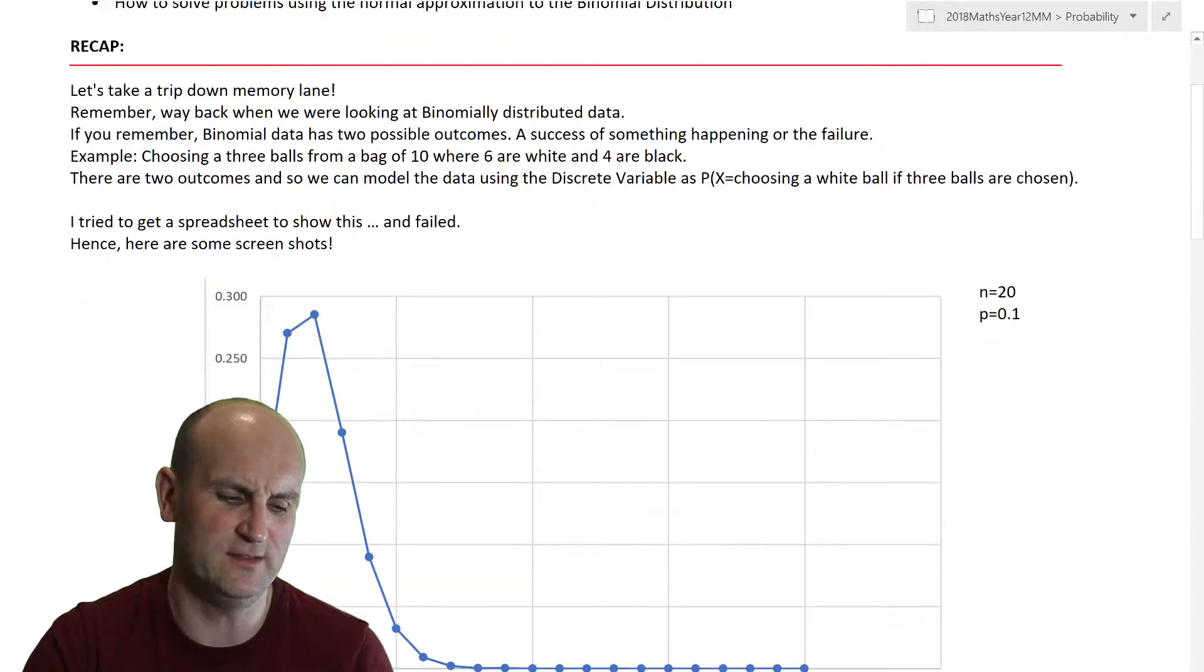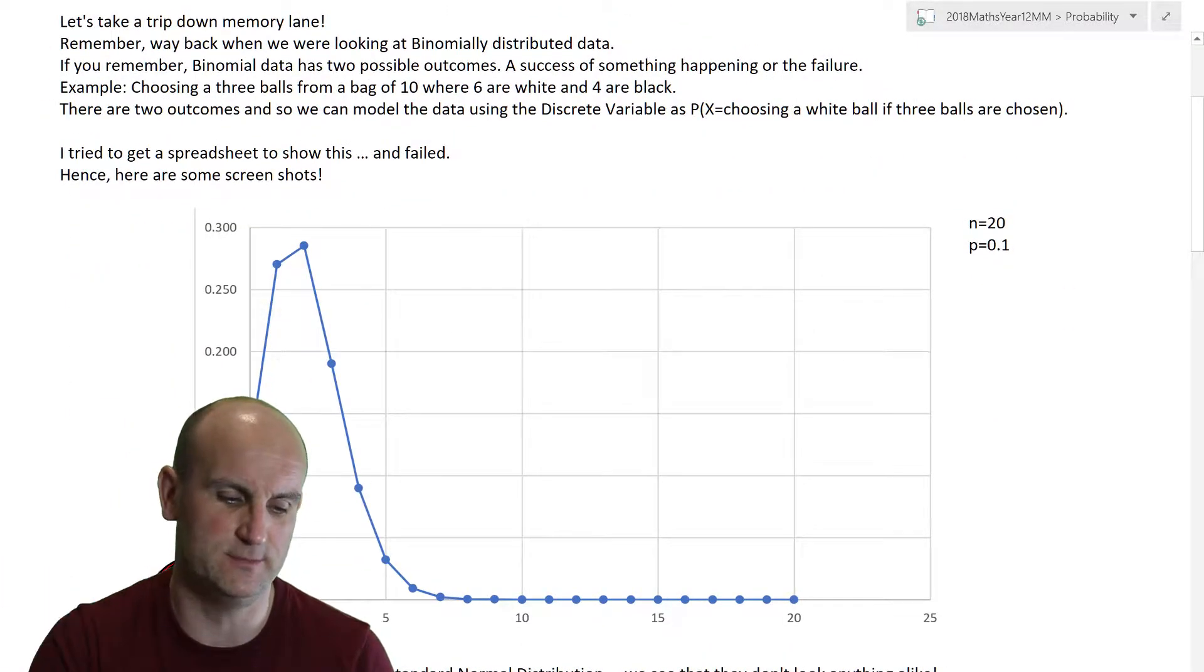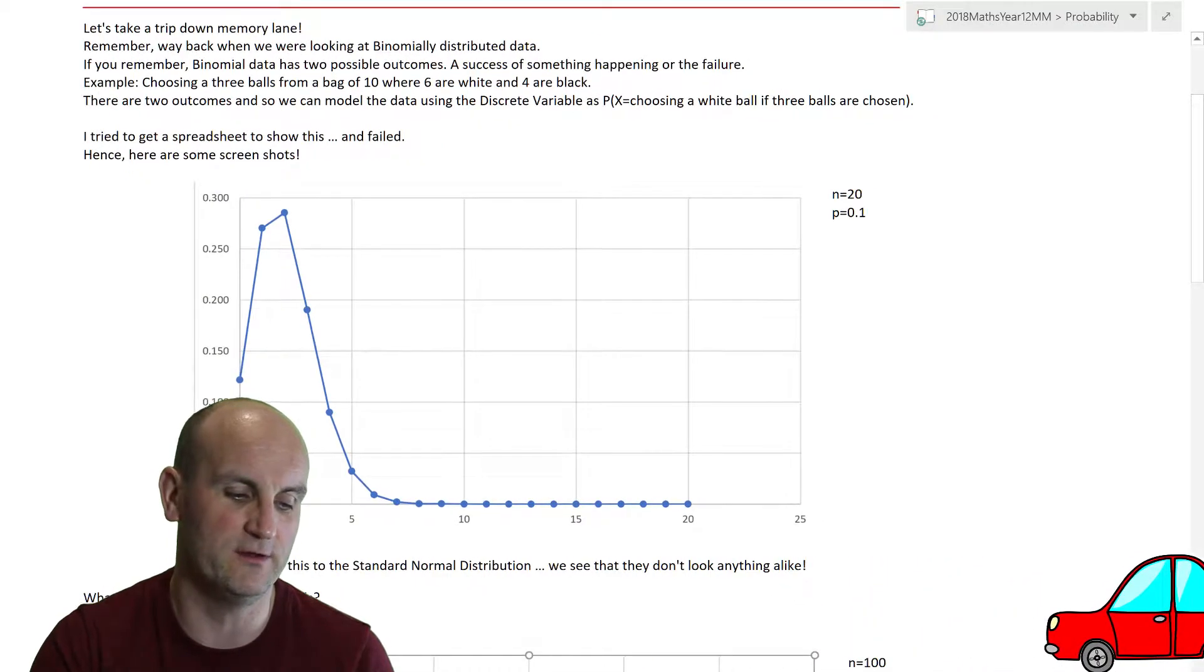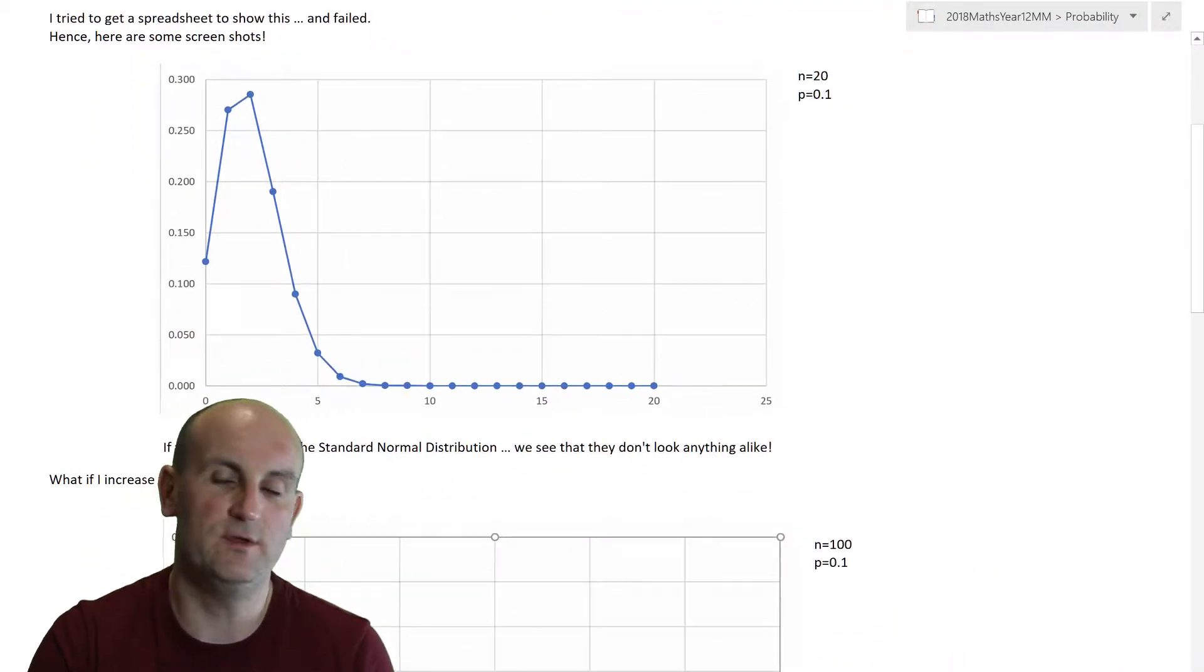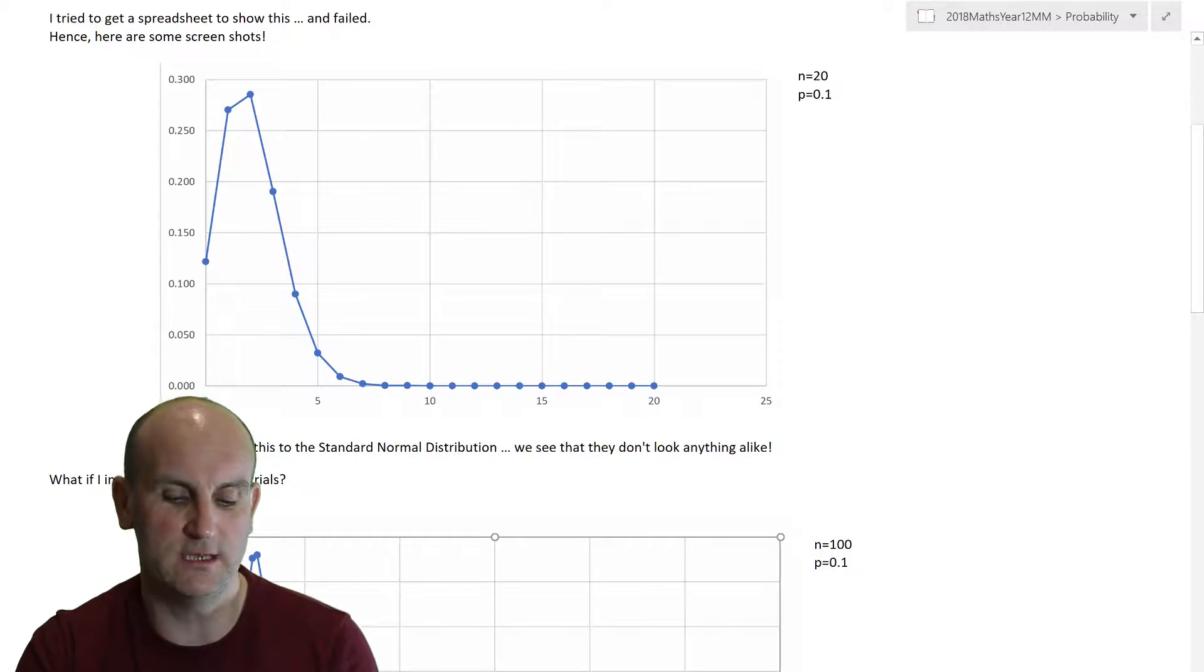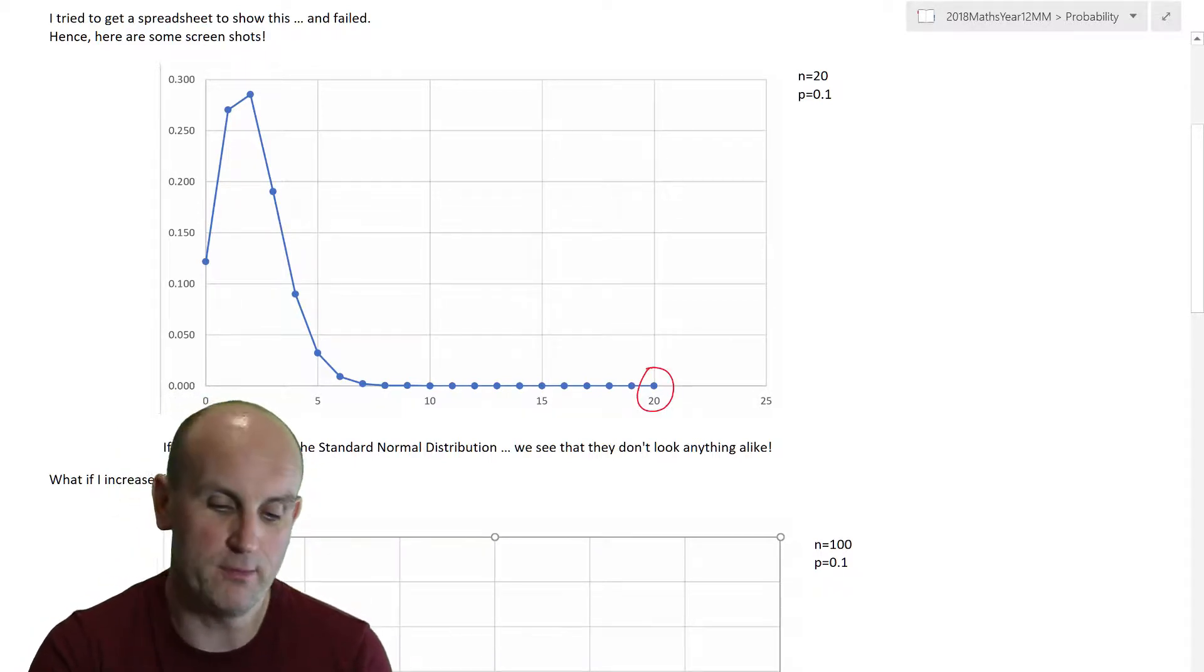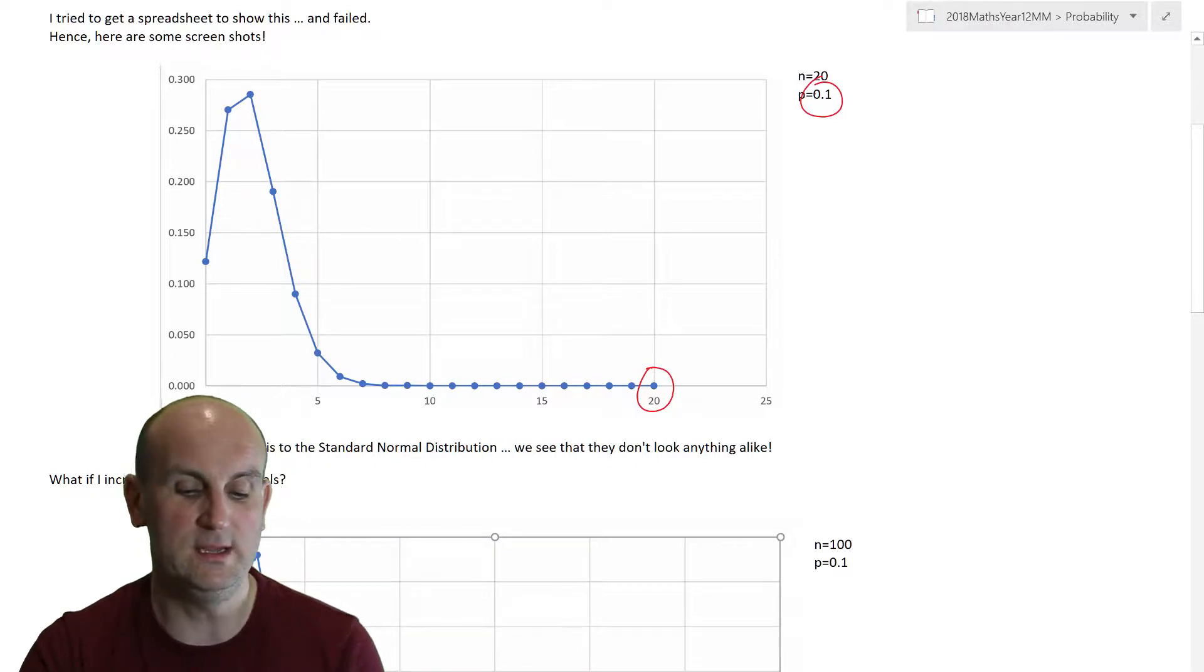You want to say, well, can I do that? Well, as I say here, let's take a little trip down memory lane, making it smaller so the graph fits on. If you remember, when we did the video with regards to binomial data, when we had 20 trials and a probability of 0.1, we got a fairly jagged graph, as you showed here.